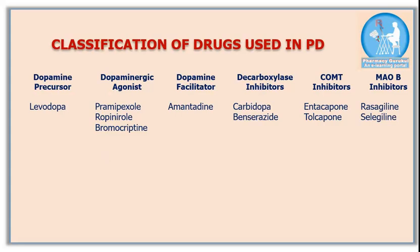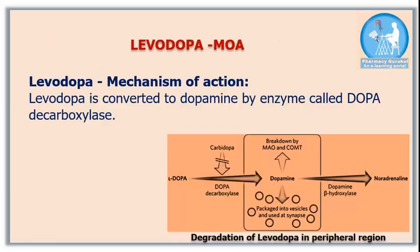Fifth are COMT inhibitors — entacapone and tolcapone. Sixth are monoamine oxidase B (MAO-B) inhibitors — rasagiline and selegiline.